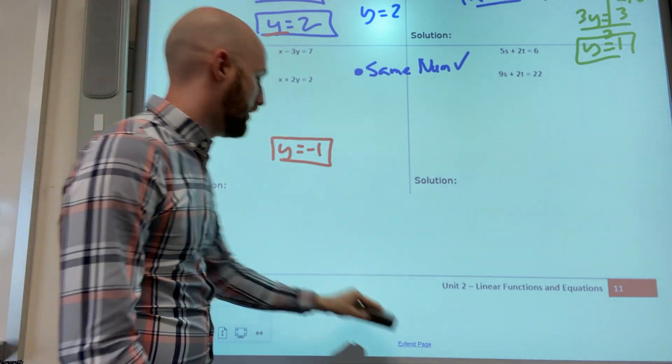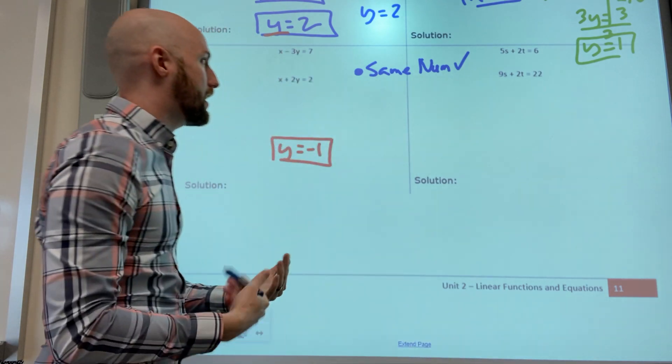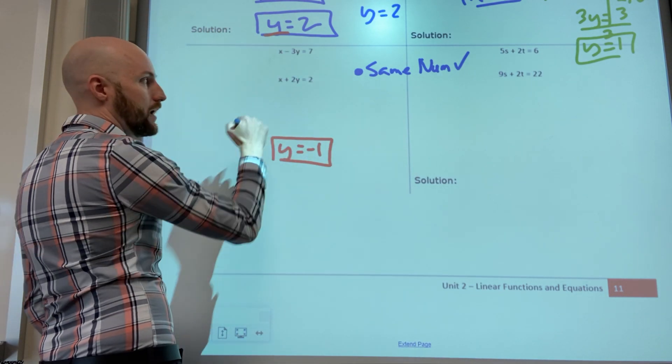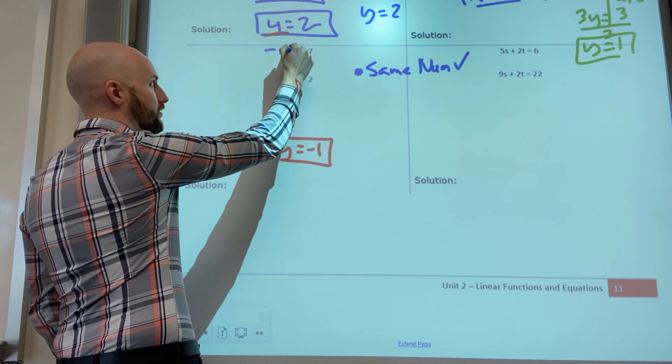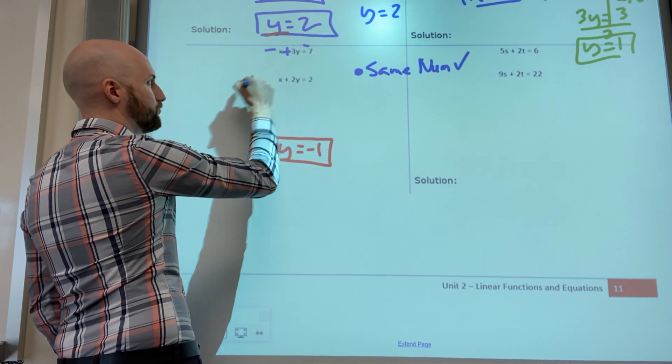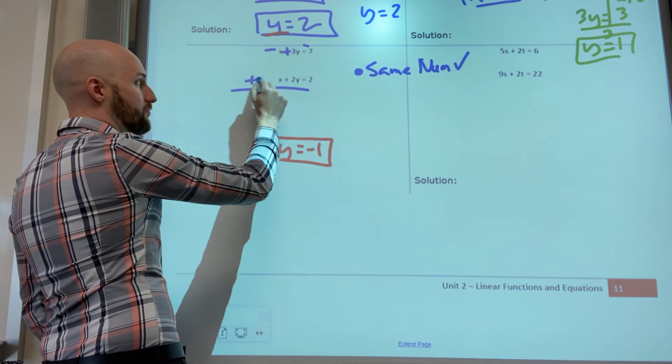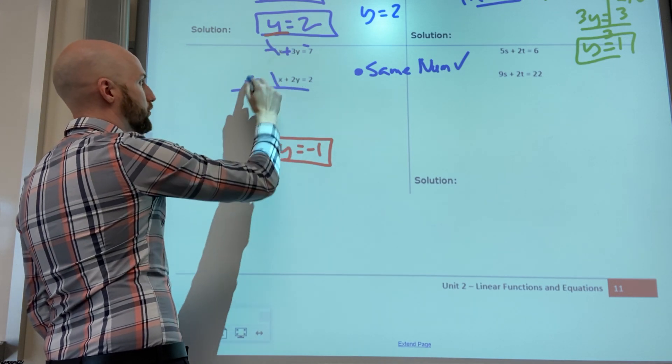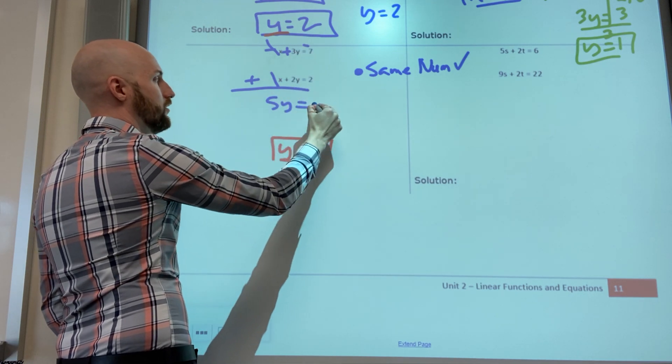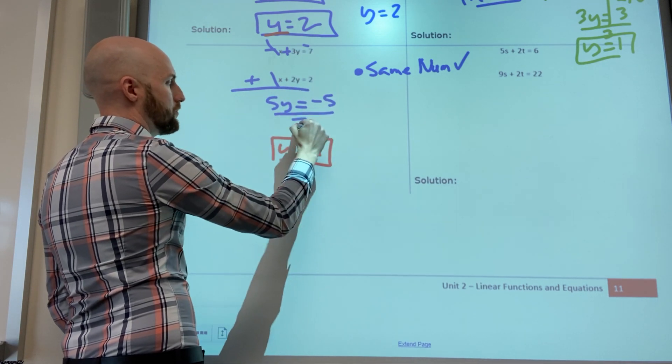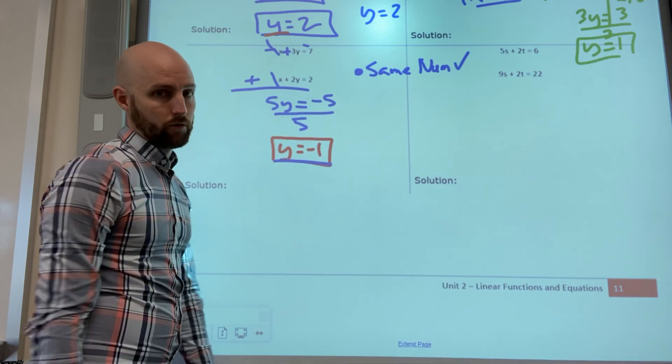Maybe just to show you, if you didn't change this one you change this one. Negative x plus x you eliminate, three plus two is five, negative seven plus two is negative five, divide by five, minus one.